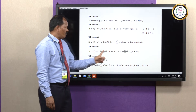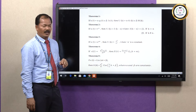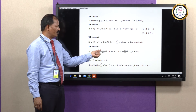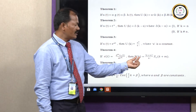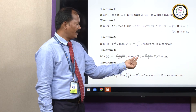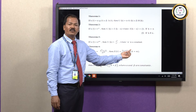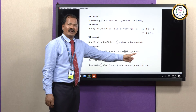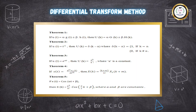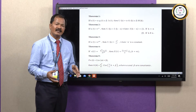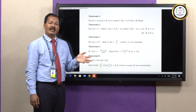For Theorem 4, suppose m equals 1: x of t equals dx1 of t upon dt. Then the transformed capital X of k equals k plus 1 factorial upon k factorial times x1 of k plus 1, which simplifies to k plus 1 times x1 of k plus 1. We can extend this idea for m equals 2, 3, and so on.